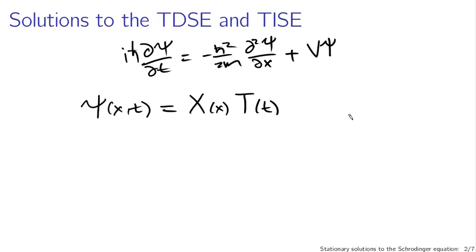Why do we write ψ this way? Well, it makes things easier and we can make some progress, but haven't we restricted our solution a lot? We have, but it turns out that these solutions written as products — resulting from solving the ordinary differential equations you get from separation of variables with the Schrödinger equation — can actually be used to construct everything that you could possibly want to know.